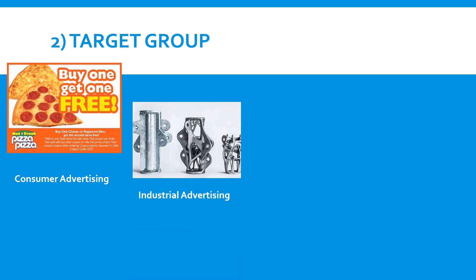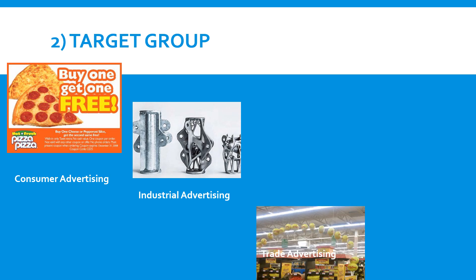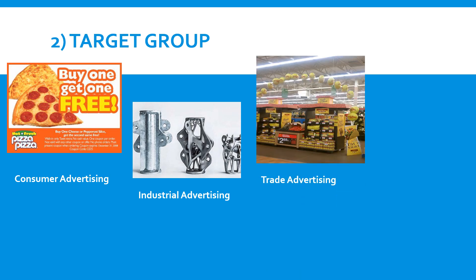Next is industrial advertising. Industrial advertising means manufacturers make advertisements targeting buyers of industrial products such as machinery, parts, components, and equipment. Then there is trade advertising, which is directed by manufacturers to distribution channels like wholesalers and retailers.